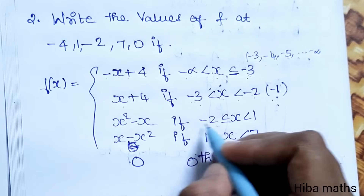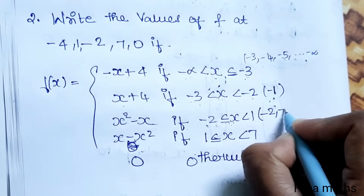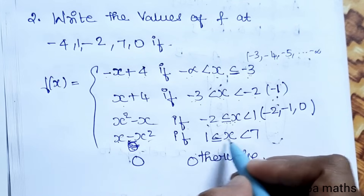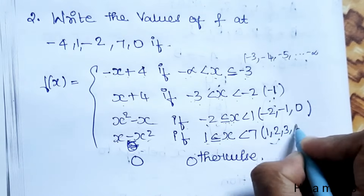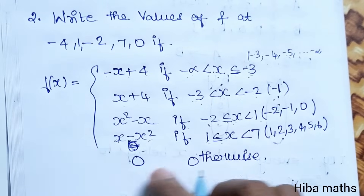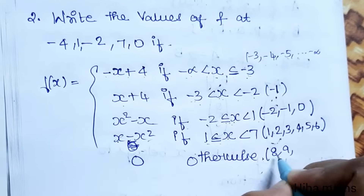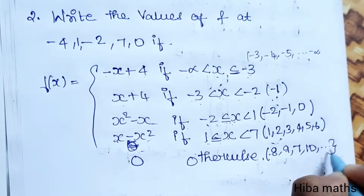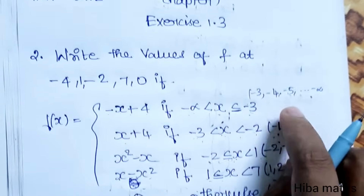For x greater than or equal to minus 2 and less than 1, we apply x squared minus x. So minus 2, minus 1, 0, and 1 fall in this range. Then x minus x squared applies for x greater than or equal to 1 and less than 7, covering 1, 2, 3, 4, 5, 6. And f of 7 equals 7 — otherwise for values like 8 or 9, it's also 7. So we have 5 questions.